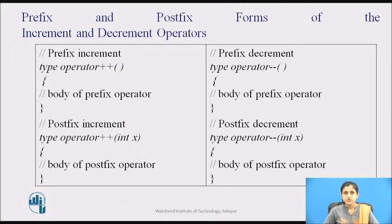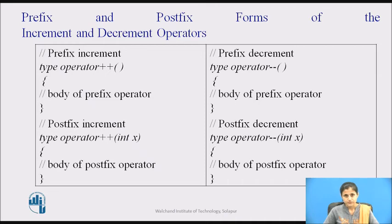Let's see the prefix and postfix forms of the increment and decrement operators. Standard C++ allows us to explicitly create separate prefix and postfix versions of the increment or decrement operators. To accomplish this, we must define two versions of the operator++ function. If ++ precedes its operand, the operator++ function without an argument is called. If ++ follows its operand, the operator++ function with an integer parameter is called. If we consider the integer parameter as x, x will have value 0.